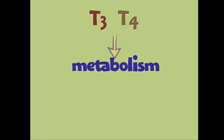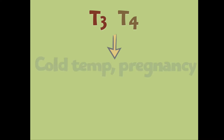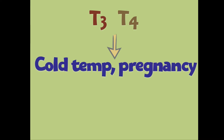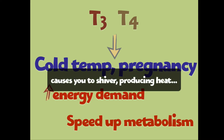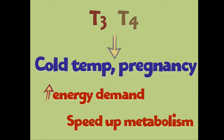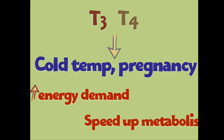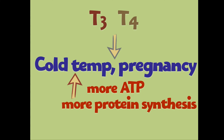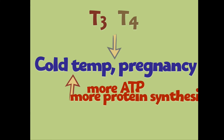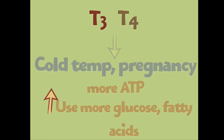T3 and T4 are the chemical messengers the thyroid produces. One of their main functions is to control metabolism and homeostasis. For example, when you're in a cold environment or when someone is pregnant, T3 and T4 increase energy demand and speed up metabolism. They speed up what cells normally do — producing more ATP by breaking down glucose, fatty acids, and lipids, and also initiating protein synthesis.